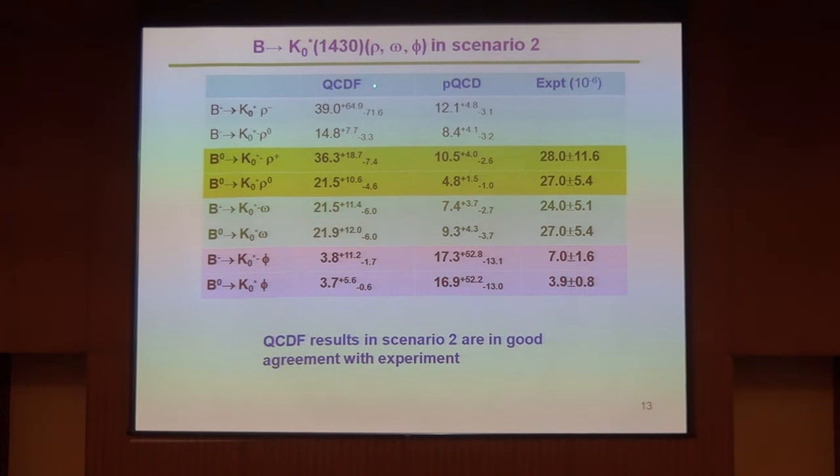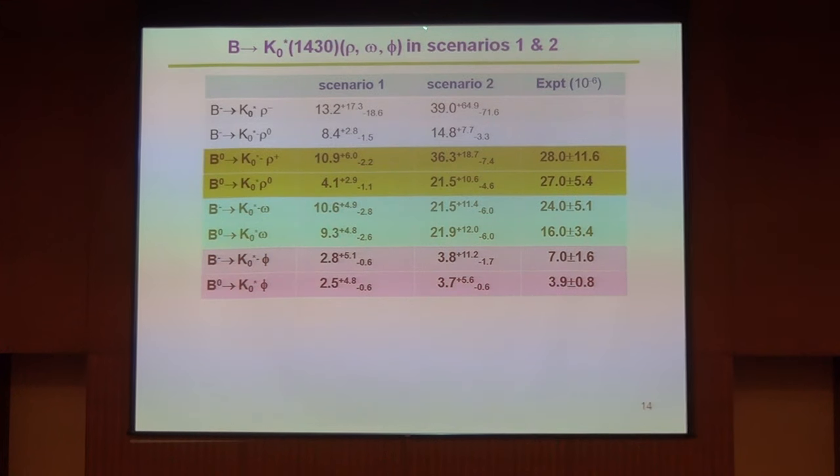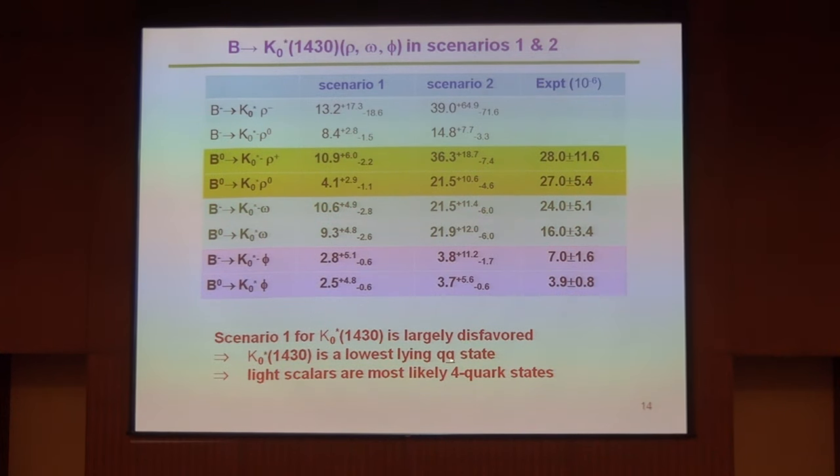Again, here is the other state K₀* for decays with f₀, ω, and φ in scenario two. We see that our prediction with QCD factorization matches experimental measurement. Again, for PQCD, too small for K₀*ω, also too small for K₀*ω, and too large for K₀*φ. And we can see the difference between scenario one and scenario two. So far I have to stick to scenario two. Let's connect to scenario one. Scenario one: too small for this one, too small for K₀*ω, and too large, also too small for K₀*φ. So it turns out that scenario one is almost ruled out or at least largely disfavored, and scenario two is much better favored.